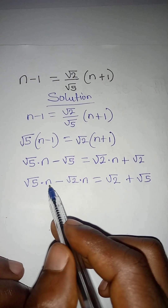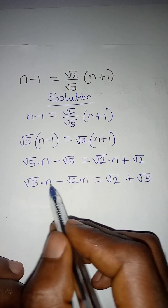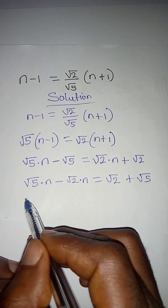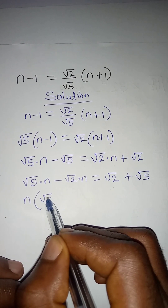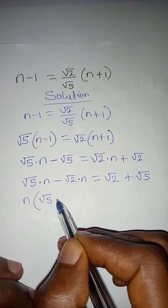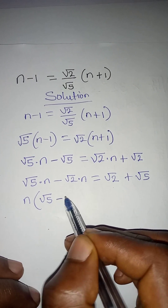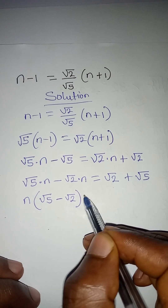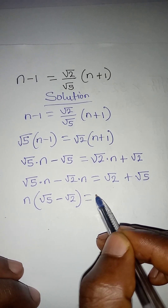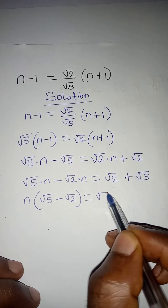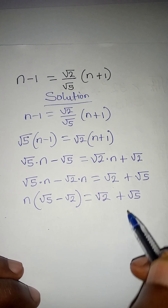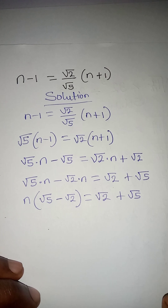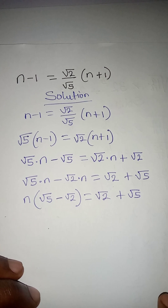The next thing I'm going to do is factor out n, since it's common to both terms. So if n comes out I will have n times root 5 minus root 2, equal to root 2 plus root 5.